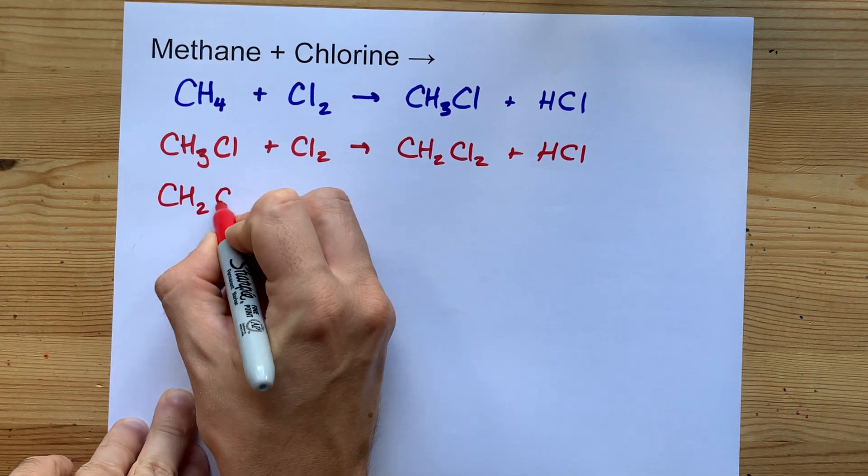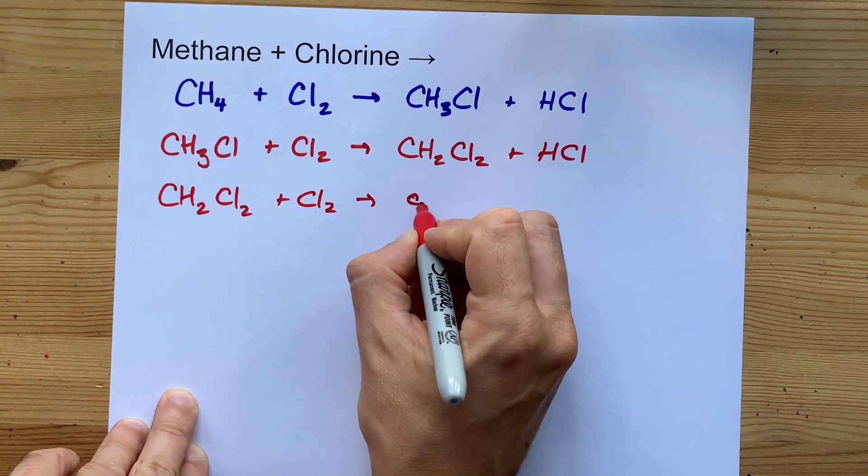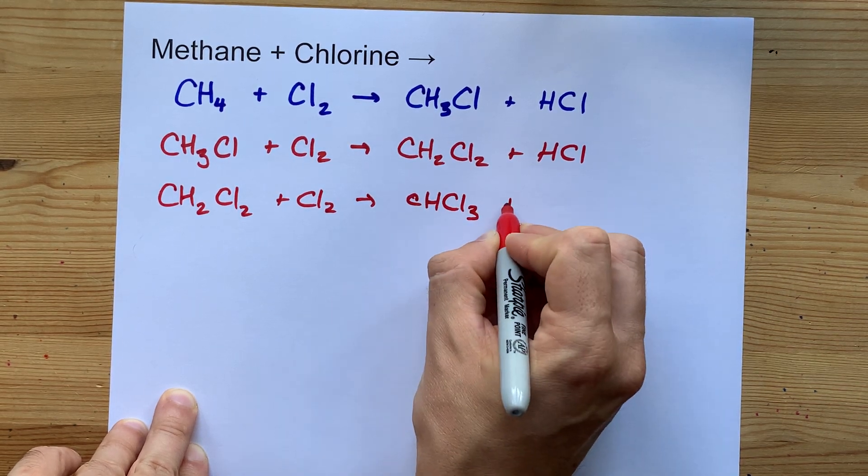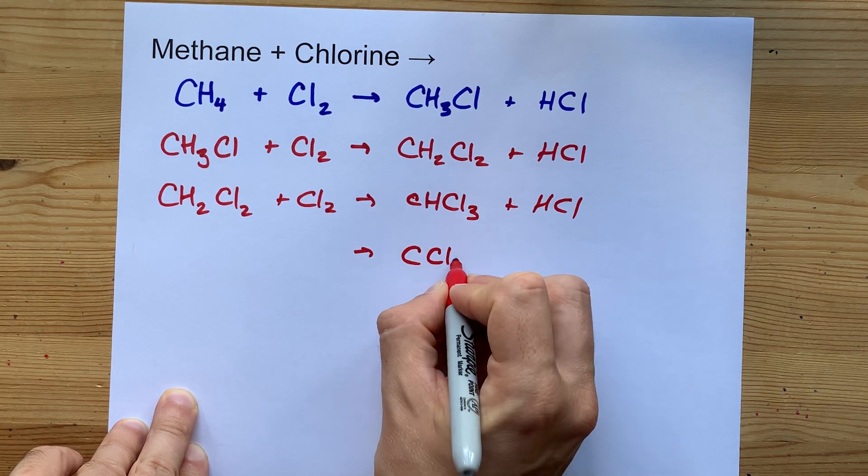The CH2Cl2 can also react with another chlorine to become CHCl3. And you can do it a fourth time to end up with CCl4.